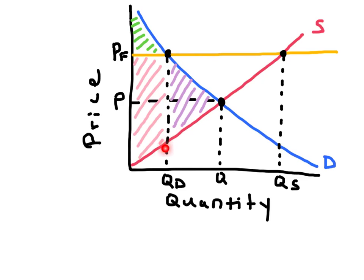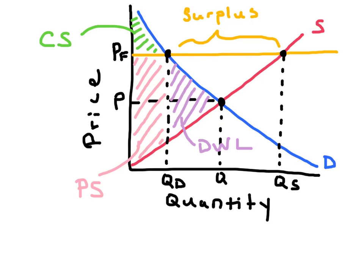A price floor will also create deadweight loss. Deadweight loss represents the inefficiency that resulted from this price control. You should be able to identify where the market surplus would occur, the deadweight loss, the new consumer surplus, and the producer surplus from a price floor. You should also be able to compare the consumer and producer surpluses before the price floor to after the price floor.